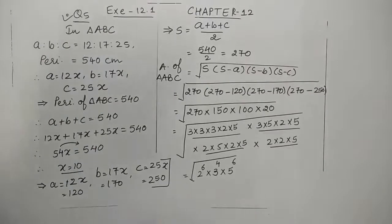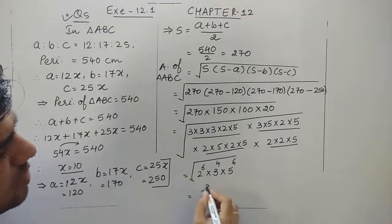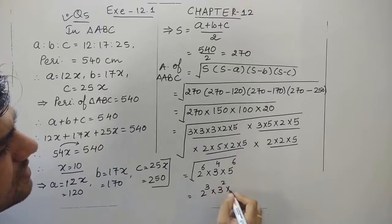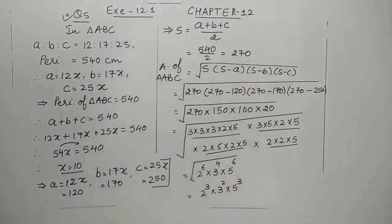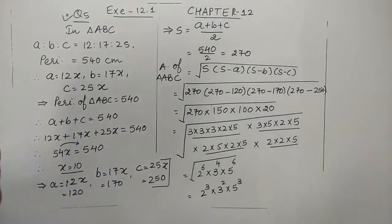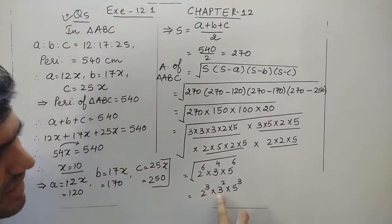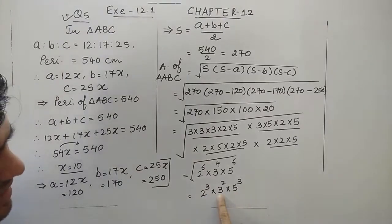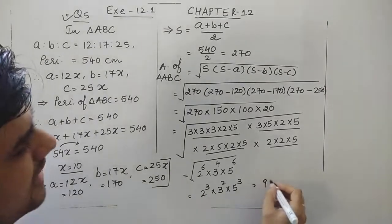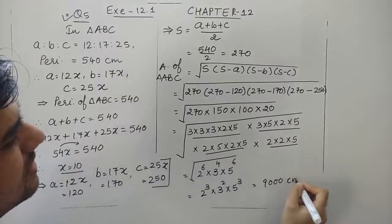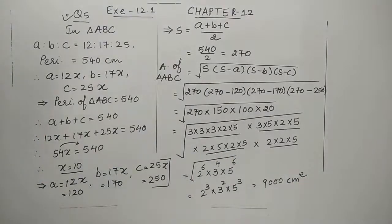When we take the square root, each power is halved. So 2 to the power 5 gives us 10 from the even part, 3 to the power 4 gives 9, and 5 to the power 5 gives its even-powered component. The product works out to give 1000 times 9, which is 9,000 cm². The area of the given triangle is 9,000 cm².